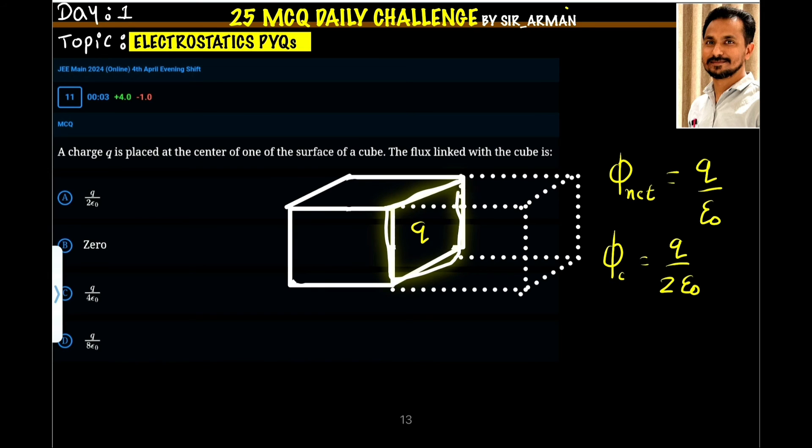Two small identical cubes. So the flux through each cube will be half. So it is q by two epsilon not (q/2ε₀). So the correct answer is option A.